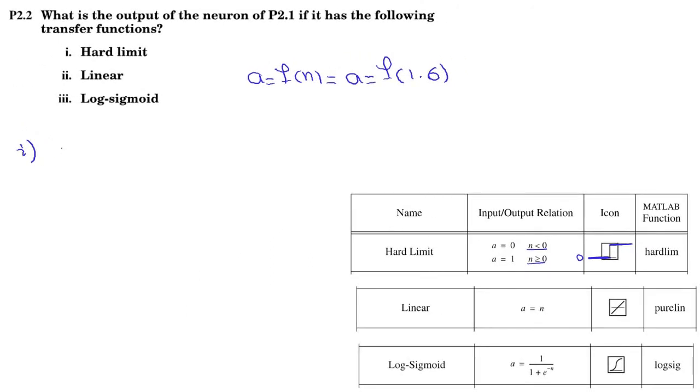Therefore, A equals, I'm just going to write its MATLAB function name as the name of the function. Hard LIM of 1.6 equals, it's greater than 0. It's positive. So we can have A as 1. So A equals 1.